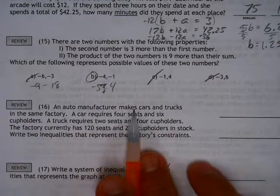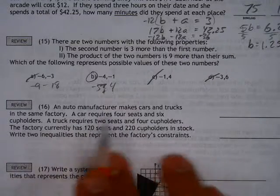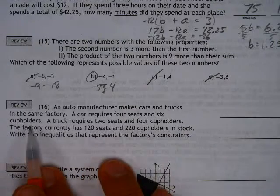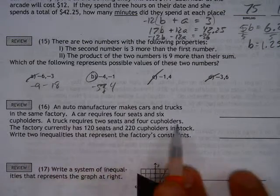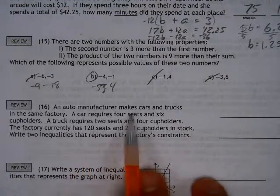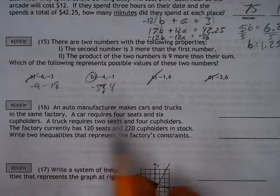This one here - an auto manufacturer makes cars and trucks at the same factory. This one's tricky because it talks about a car requiring four seats and six cup holders, and a truck requires two seats and four cup holders. We kind of want to maybe say a car equation is 4s plus 6c,